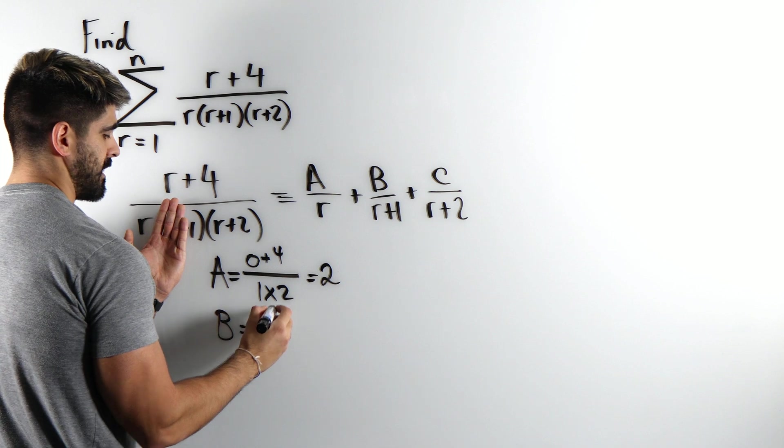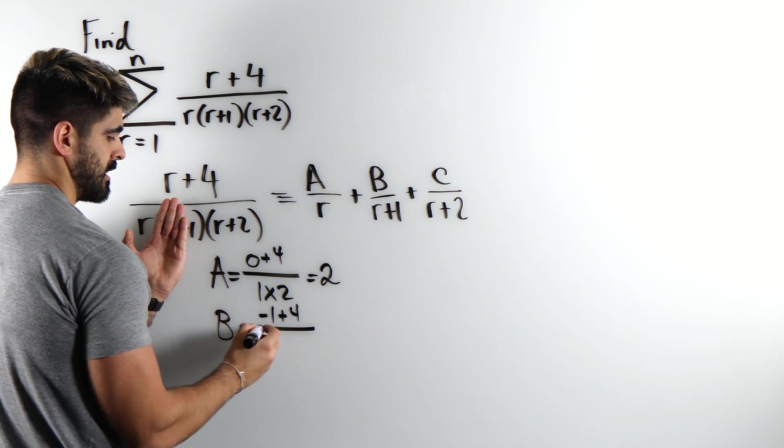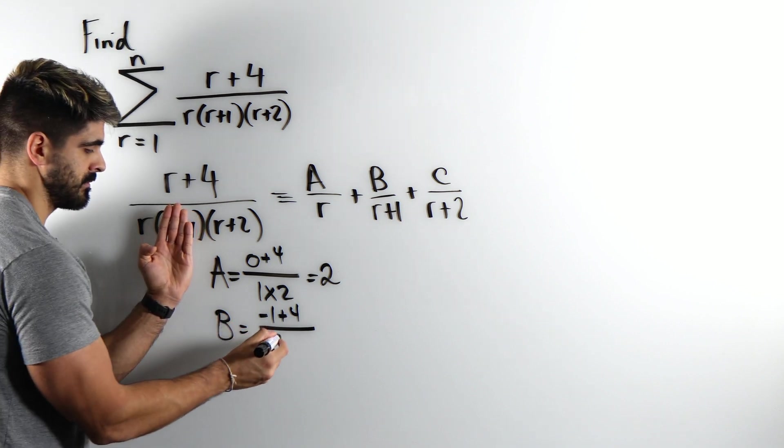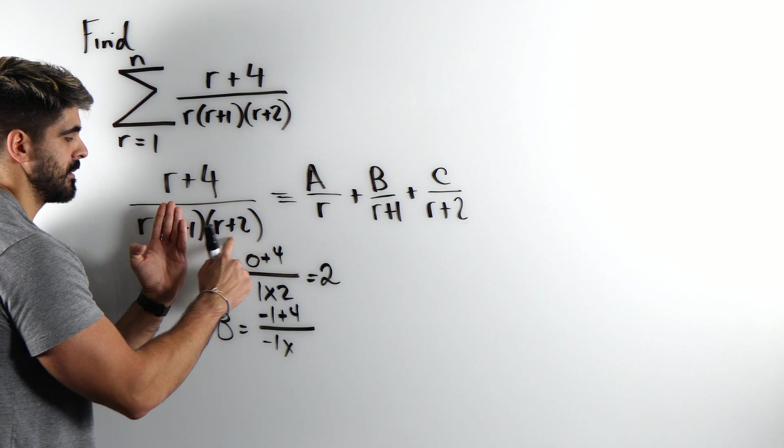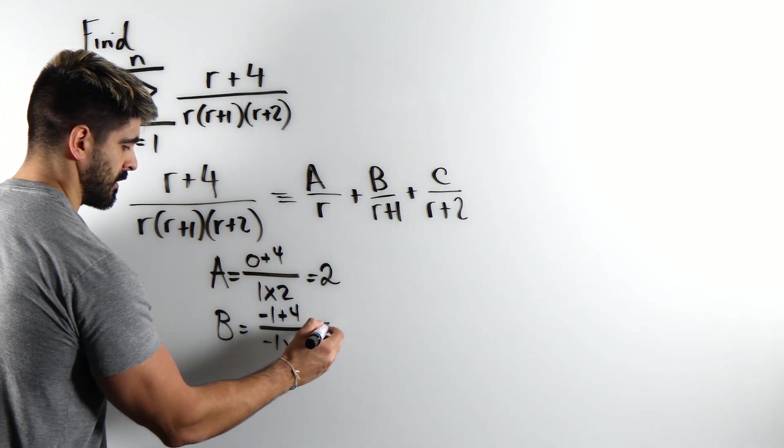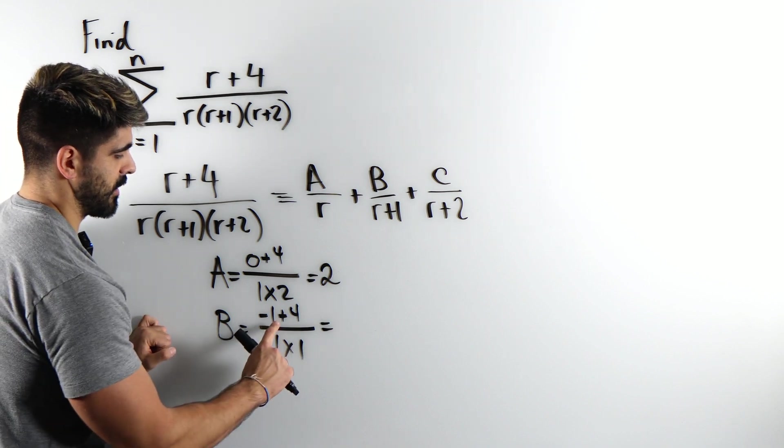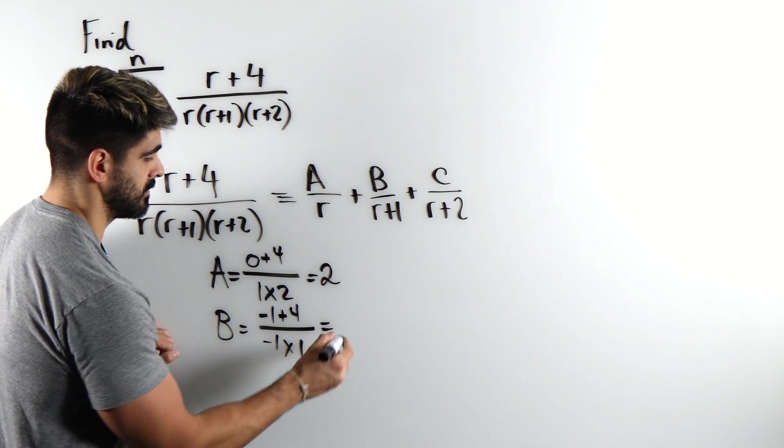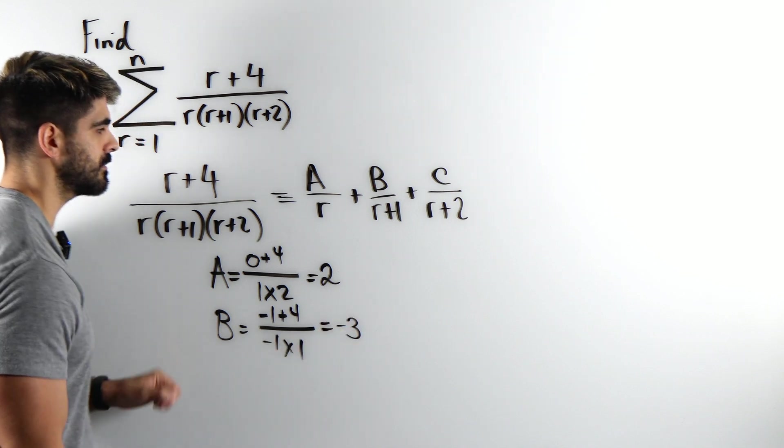So I have minus 1 plus 4 divided by, so don't forget that r, minus 1 times minus 1 plus 2 which is just 1. So we're left with minus 1 plus 4 which is 3 divided by negative 1 minus 3.